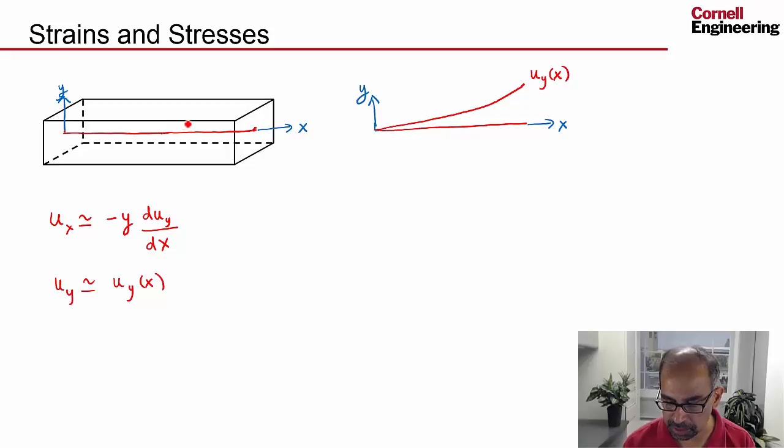The displacement in the x and y-direction of any arbitrary point at the beam. The displacement of a point like that in the x-direction is given like that, and the y-direction is the same as the displacement in the y-direction of the corresponding point at the neutral axis. This we saw.